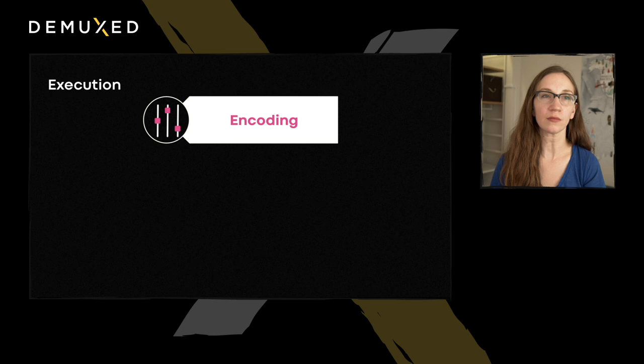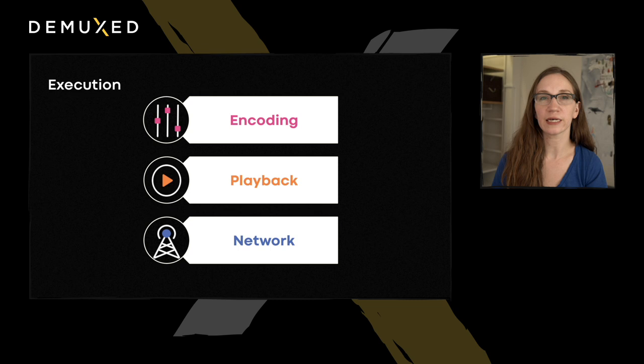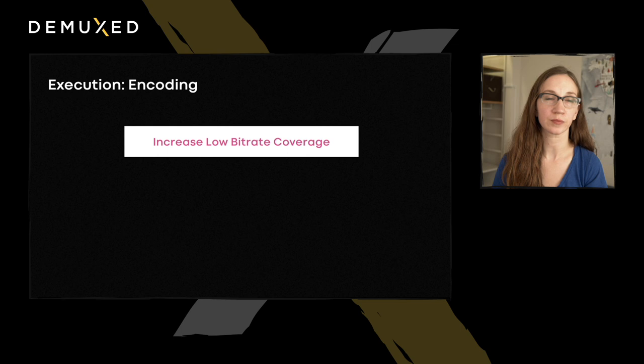Now I'll talk about the work that we executed on to achieve improvements. The work is in three broad focus areas. The first is on the video encoding side. Next is on the video playback side, including our ABR algorithms. And finally, I'm going to touch upon some work that we did on the network side. This isn't comprehensively all the work we did as part of this project, but these examples should be representative of the types of improvements we made across the entire stack.